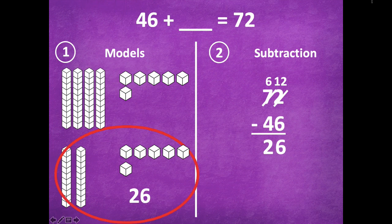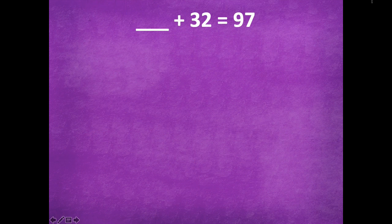So look at that friends, I got 26 in both methods that I used to solve this problem. So I can go ahead and say that 26 is my missing addend. Now remember, you can check your work by solving this problem. So you would say 46 plus 26. If that equals 72, then you solved for the missing addend correctly. If not, then you need to go back and look at your work for either the models or the subtraction method.